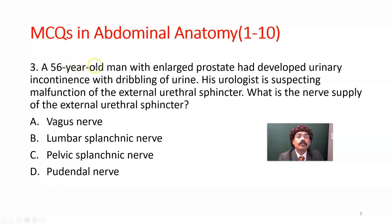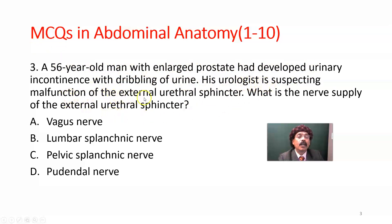Question number three: A 56-year-old man with an enlarged prostate developed urinary incontinence with dribbling of urine. His urologist suspected malfunction of the external urethral sphincter. What is the nerve supply of the external urethral sphincter?